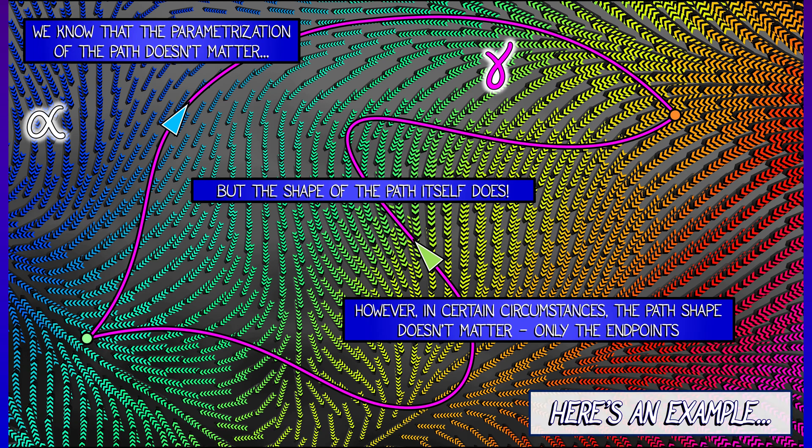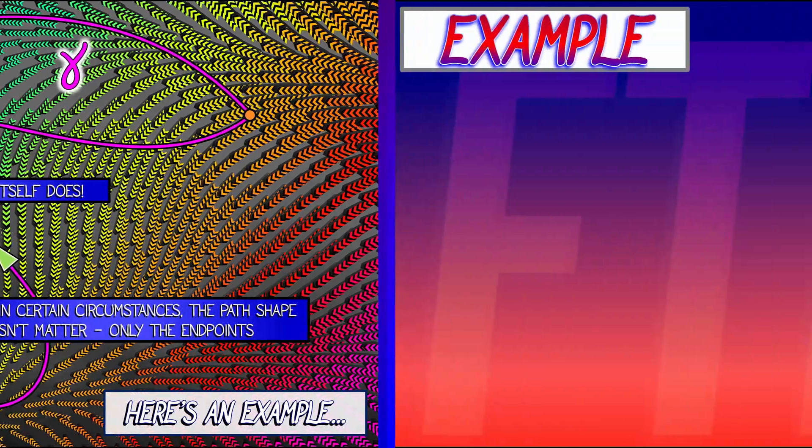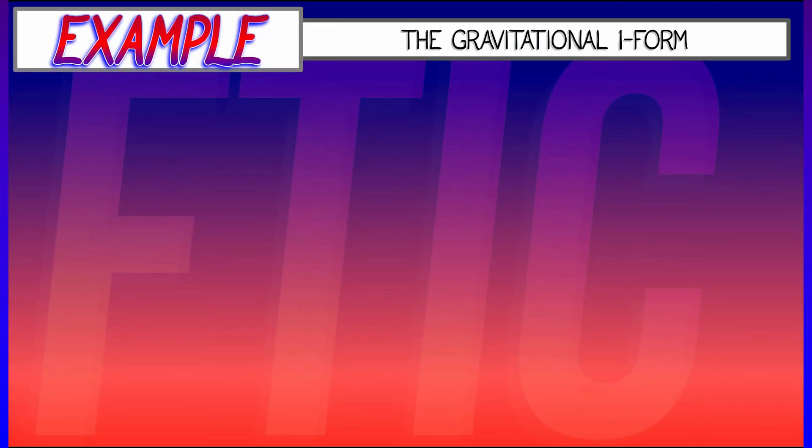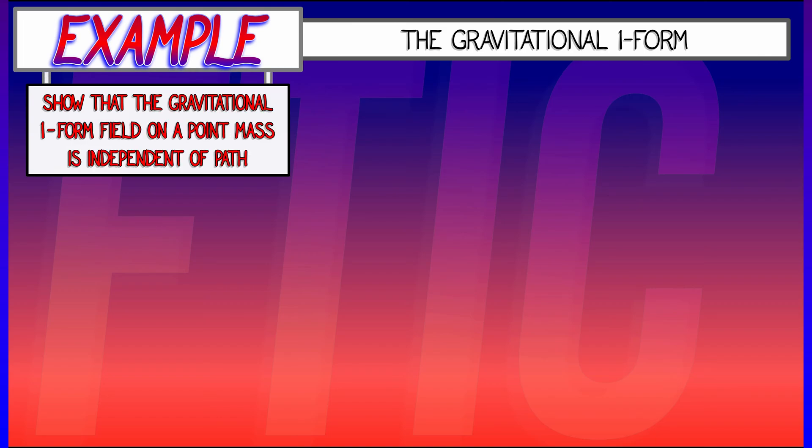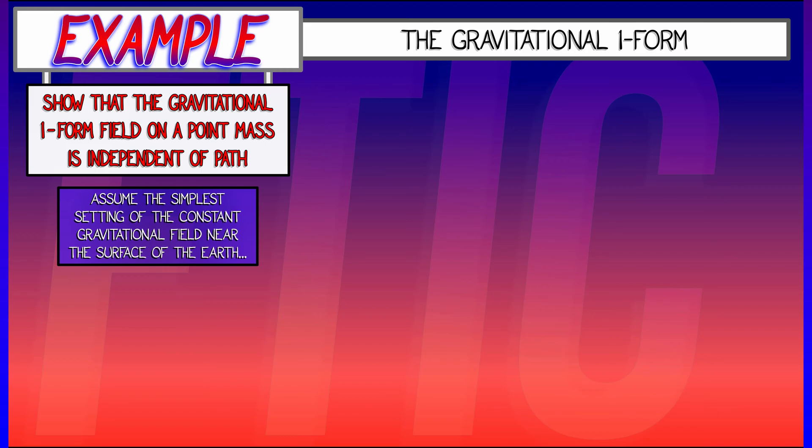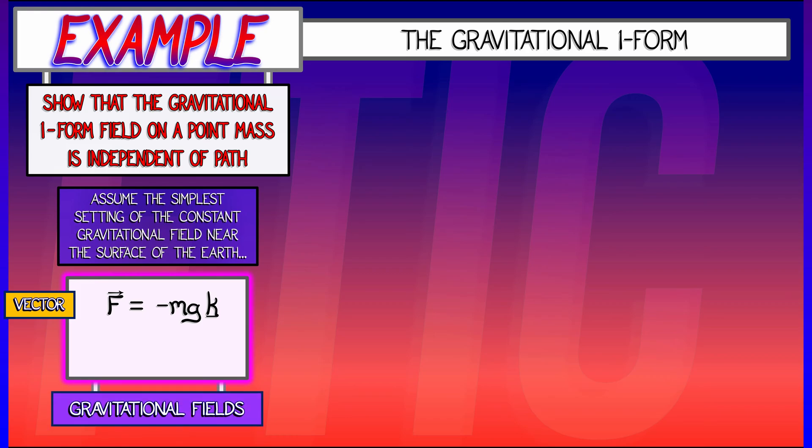Here is one classical example where that path independence shows itself. And this comes up in gravity. Let's consider the gravitational field on a point mass. Let's do the simplest setting. Let's say that you're near the surface of the earth. You've got a gravitational field, f, that is minus mgk.